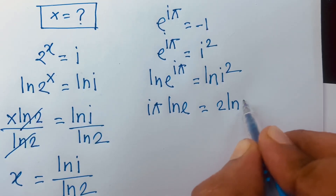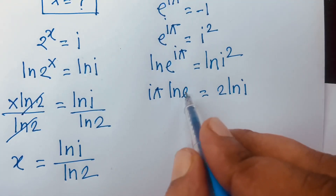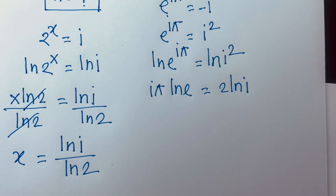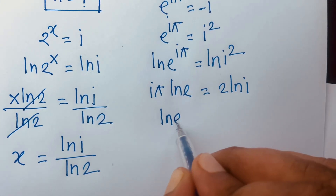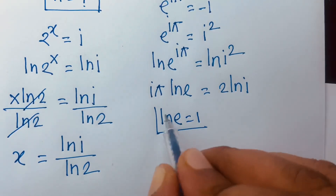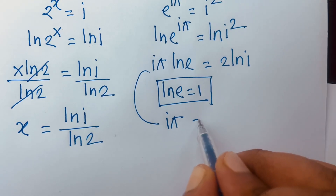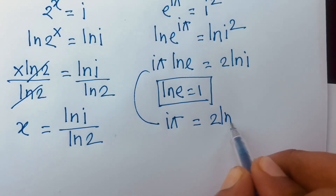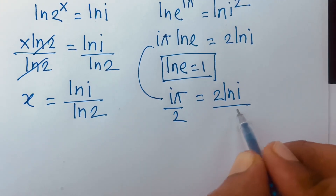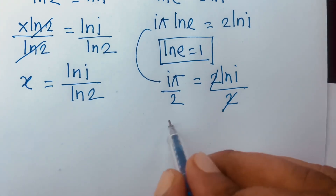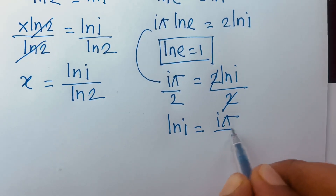We know that ln e equals 1, so the equation becomes i pi is equal to 2 ln i. Dividing both sides by 2, the two cancels, and we find the value of ln i is equal to i pi over 2.